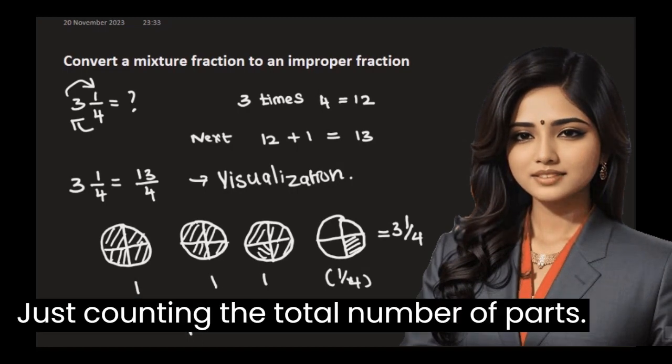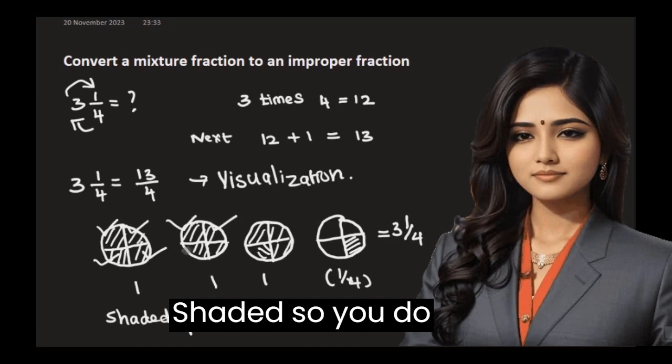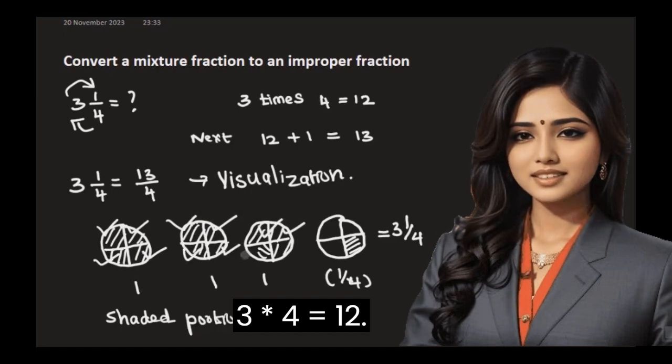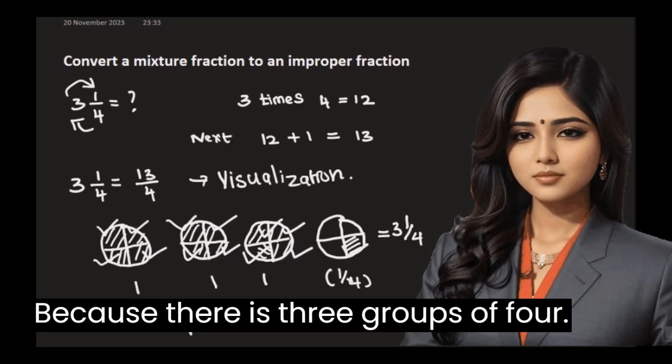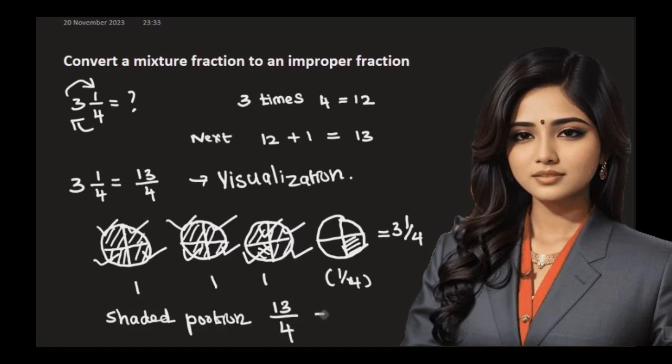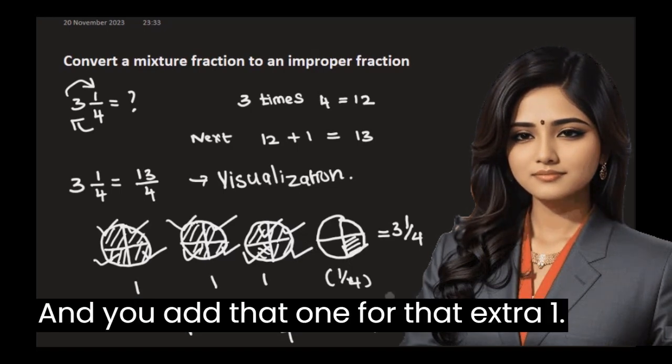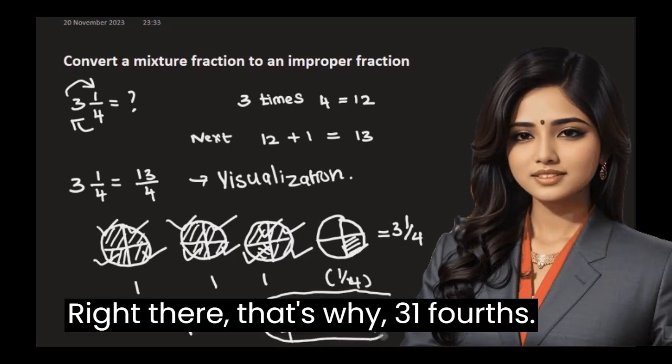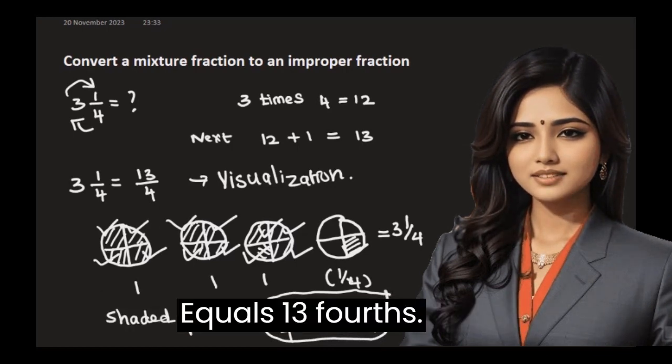is just counting the total number of parts shaded. So you do 3 times 4 equals 12 because there is 3 groups of 4, and you add that 1 for that extra 1 right there. That's why 3 and 1/4th equals 13/4ths.